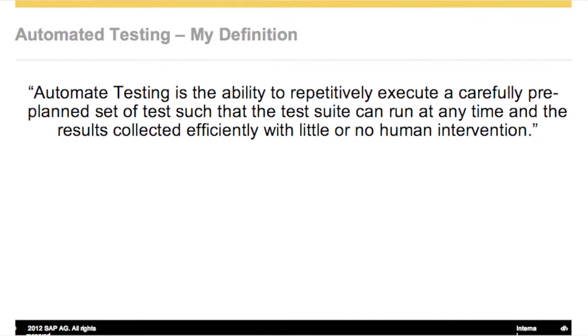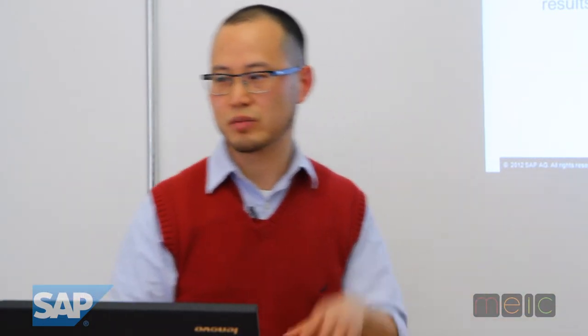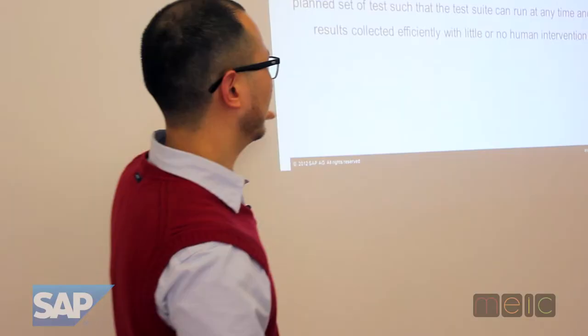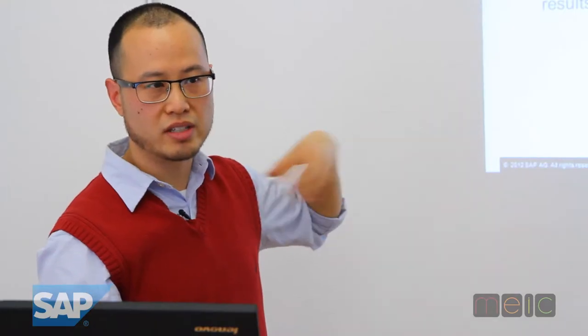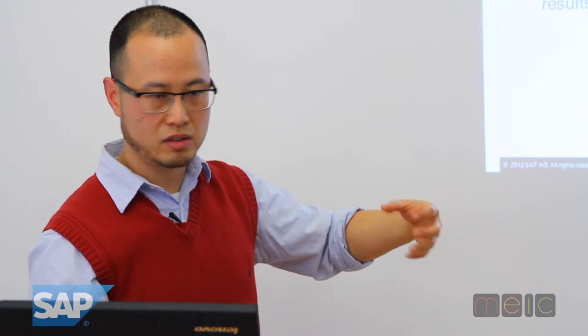So let's rephrase that — the Wikipedia definition is big and long. I would say automated testing is the ability to repeatedly execute a carefully pre-planned set of tests such that the test suite can run at any time and the results collected efficiently with little or no human intervention. My focus is on this repetitive idea — you take something so you can scale it — and the idea that you have this comparison, which is a big part of it.